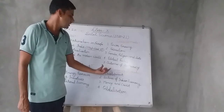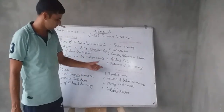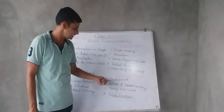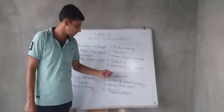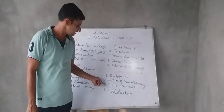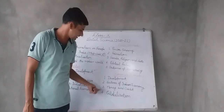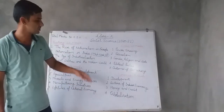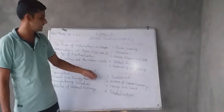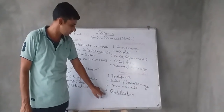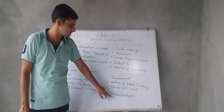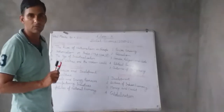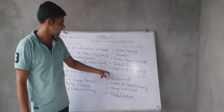Last is economics, which will have four chapters: first, Development; second, Sectors of the Indian Economy; third, Money and Credit; and fourth, Globalization. A fifth chapter on consumer rights is also given in the economics book, which we will discuss as part of project work.